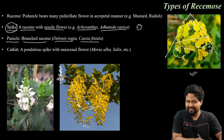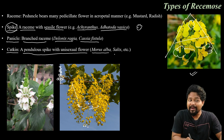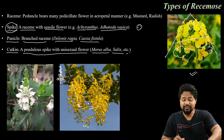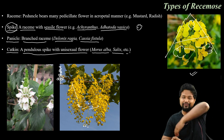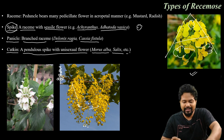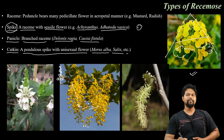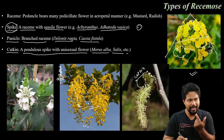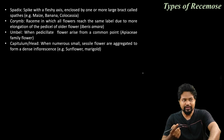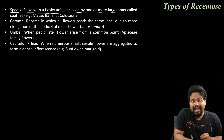This is panicle type of racimose — it is a branched raceme. Examples include Delonix regia and Cassia fistula. Catkin means a pendular spike with unisexual flowers — examples: Morus, Salix. It is a pendular, drooping type of inflorescence. Spadix means a spike with a fleshy axis, enclosed by one or more large bracts called spathe. Examples: maize, banana, Colocasia.